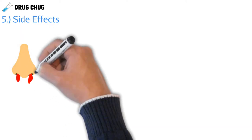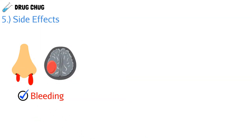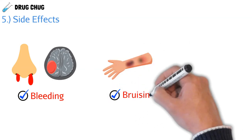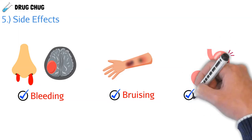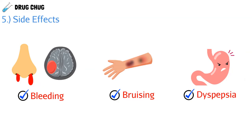Let's go over common side effects of ADP receptor antagonists and antiplatelets in general. The first is bleeding — since we're stopping natural clotting, this can range from a common nosebleed all the way up to a brain hemorrhage. The next is bruising, because we're not allowing blood to clot or repair itself from internal damage. Finally, dyspepsia — stomach discomfort from the drug. These side effects can range from very minor to very serious.